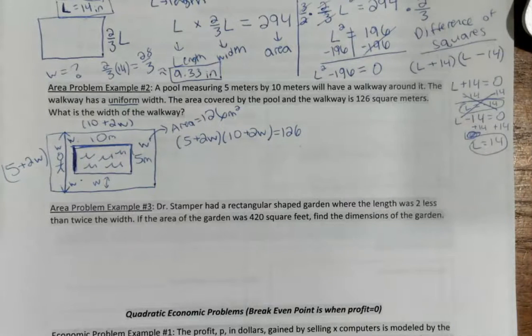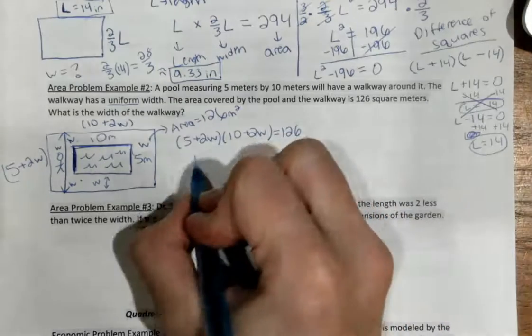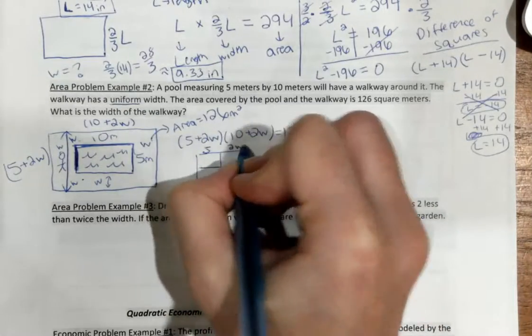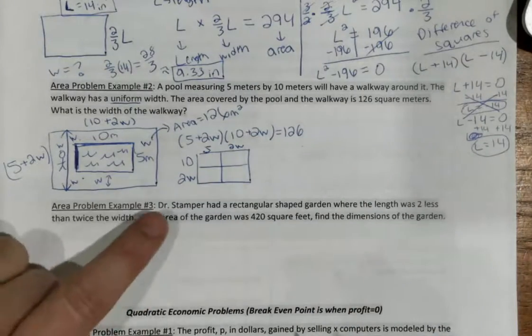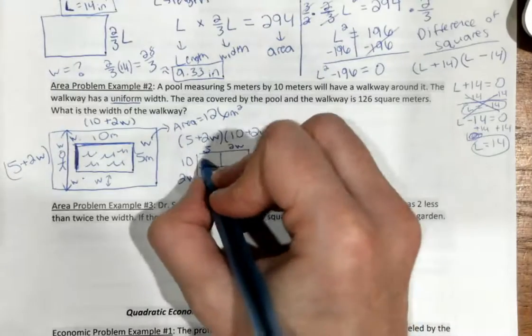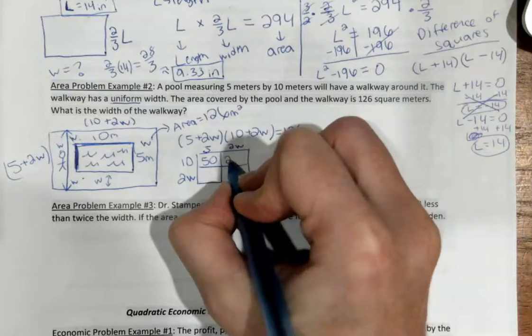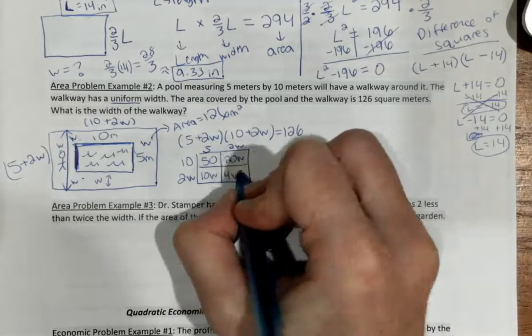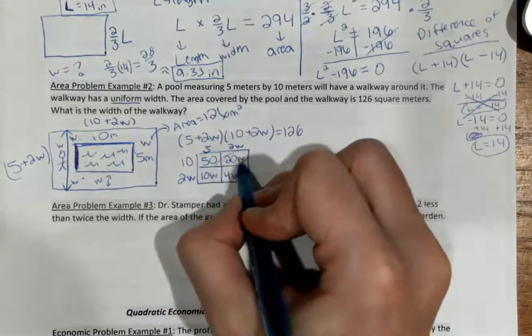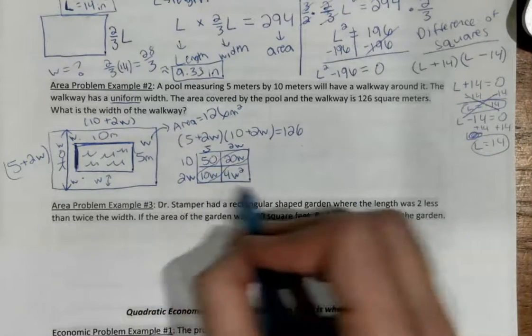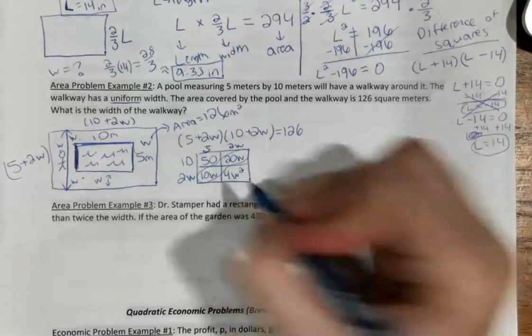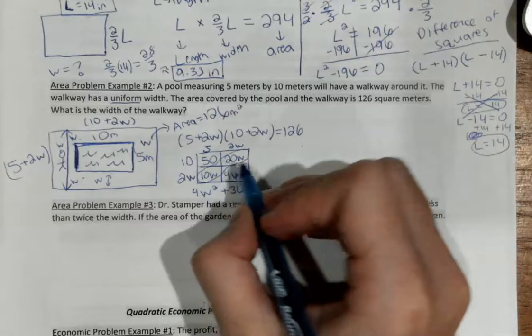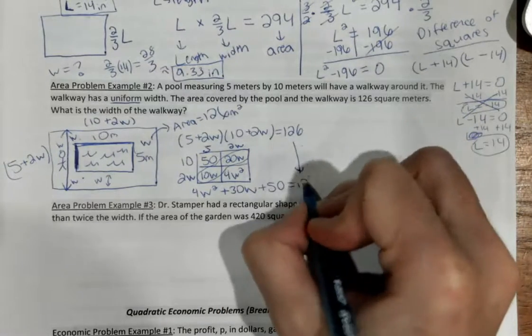I know Ms. Hawkins was using FOIL method. I want to use BOX method so you guys can remember how to do that as well. I'm going to put the first binomial expression up here, 5 and 2w, and then I'm going to put 10 and 2w right here. Remember, we just multiply whatever is above and to the left. So, 10 times 5 is 50. 10 times 2w is going to give me 20w. 5 times 2w is 10w. And then 2w times 2w gives me 4w squared. I'm going to write them all out in standard form. 4w squared plus 30w, plus 50, is going to equal my total area of 126.